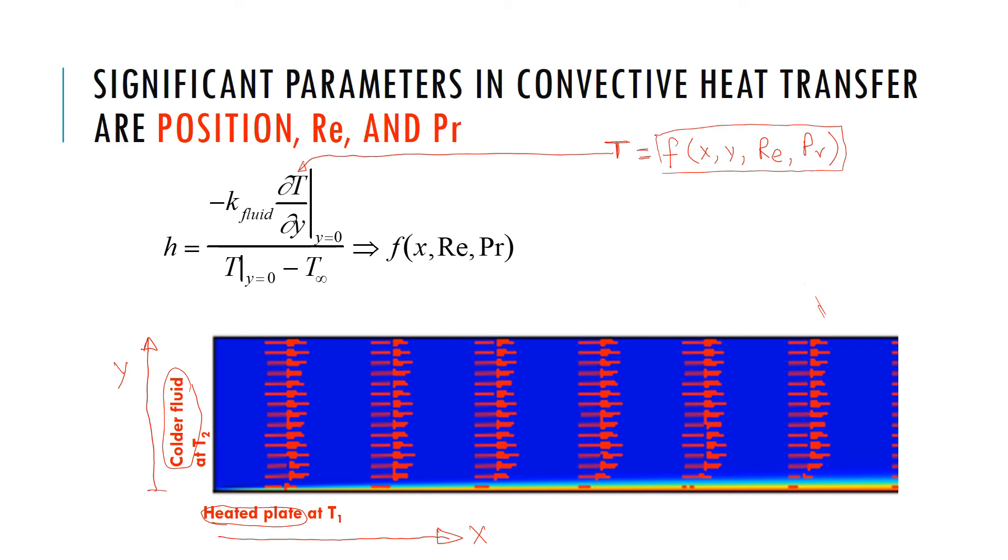So, if I take the derivative of something and then plug in y equal to 0, it will no longer be a function of y. Then, h would be a function of this x, Reynolds number, and Prandtl number.